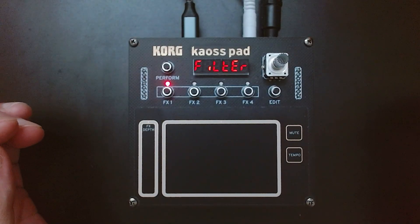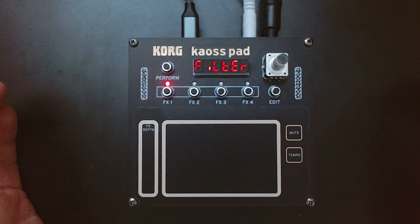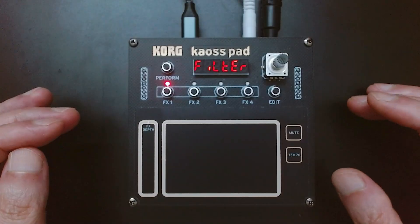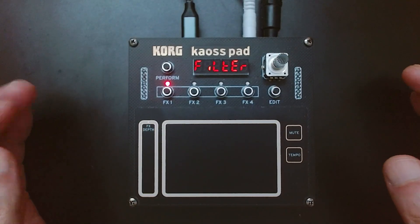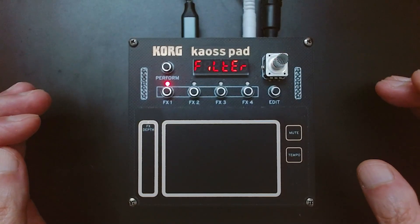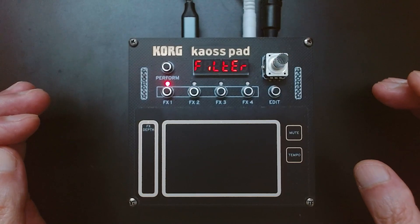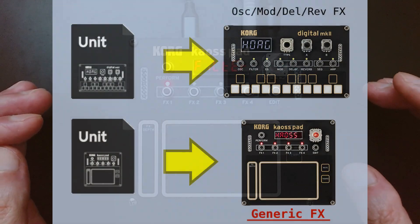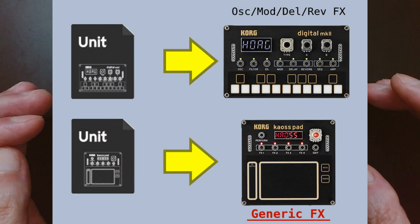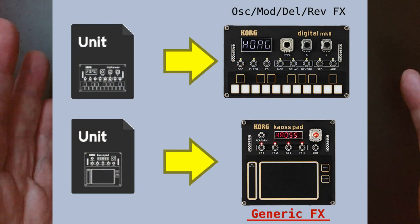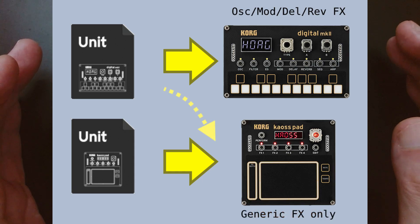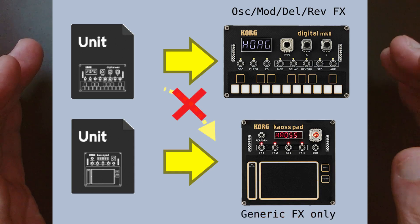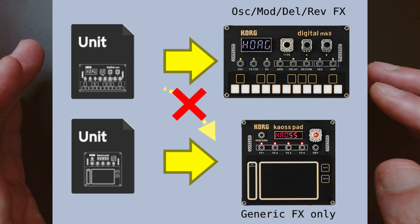The NTS3 Chaos Pad focuses on real-time touch control and uses only one type of user unit: the Generic FX. So you can't load user units made for the NTS1 or NTS1 Mark II.